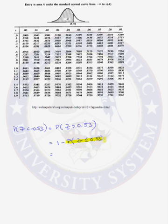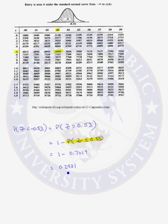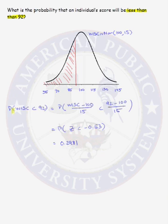We look up 0.53 in our table and find that the area to the left of 0.53 is 0.7019. And we have that the probability that Z is less than negative 0.53 is equal to 0.2981. The probability that an individual's WISC score will be less than 92, when the distribution of scores is normally distributed with mean 100 and standard deviation 15, is approximately 30%.